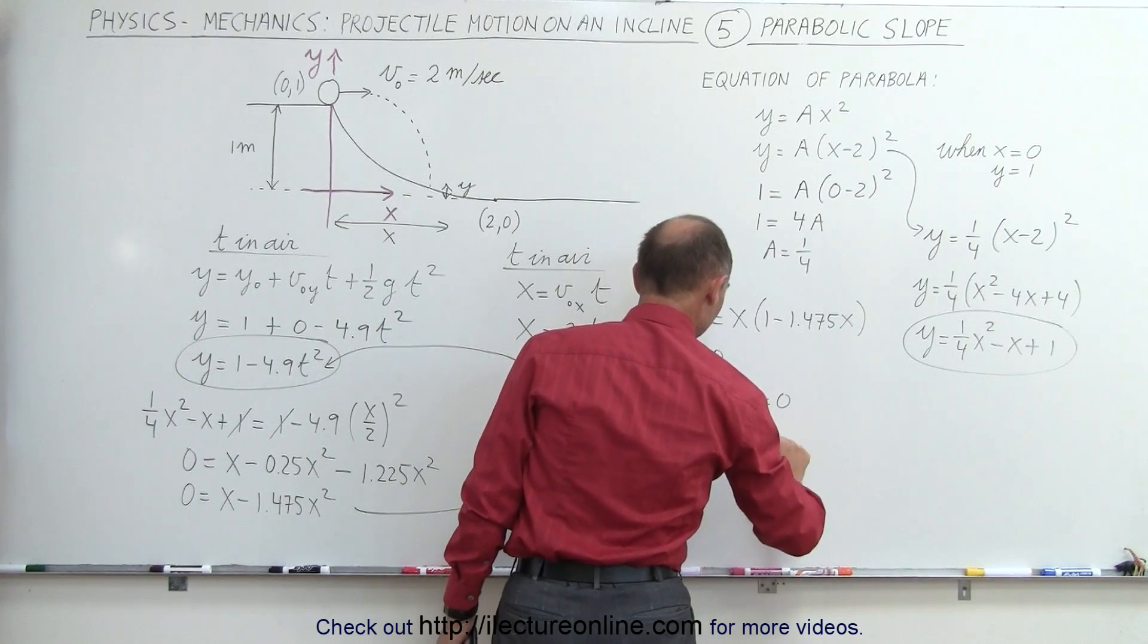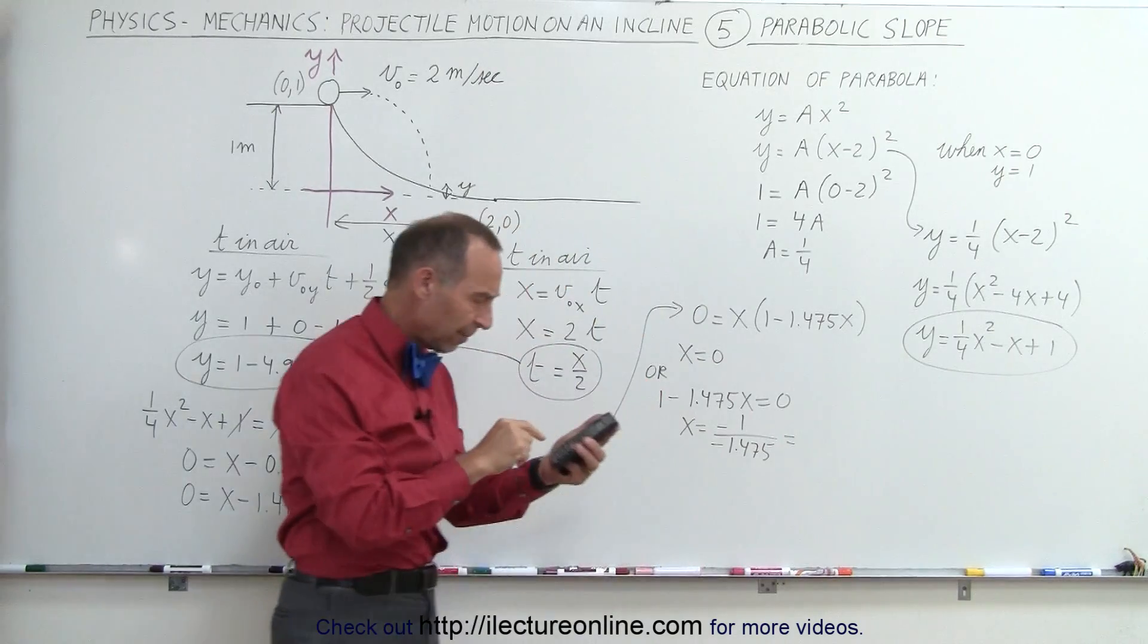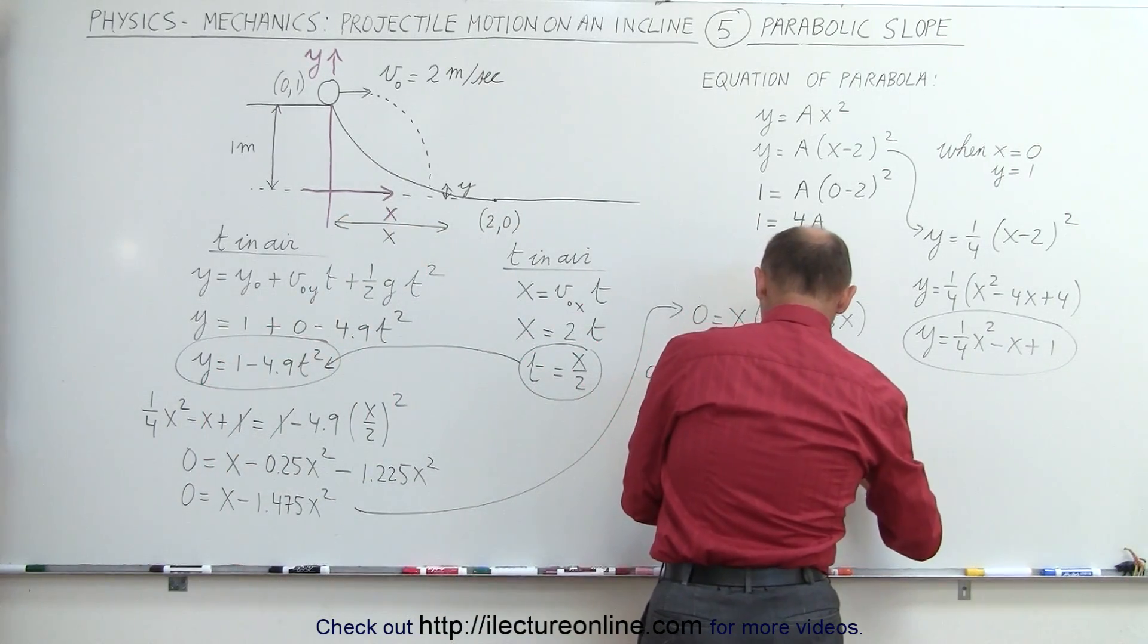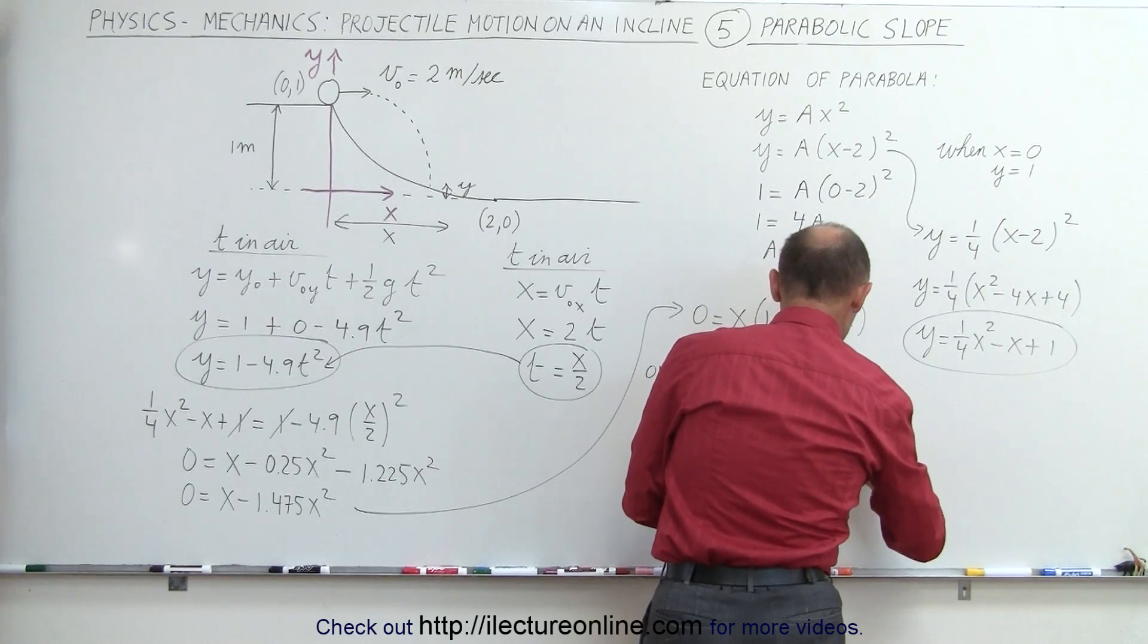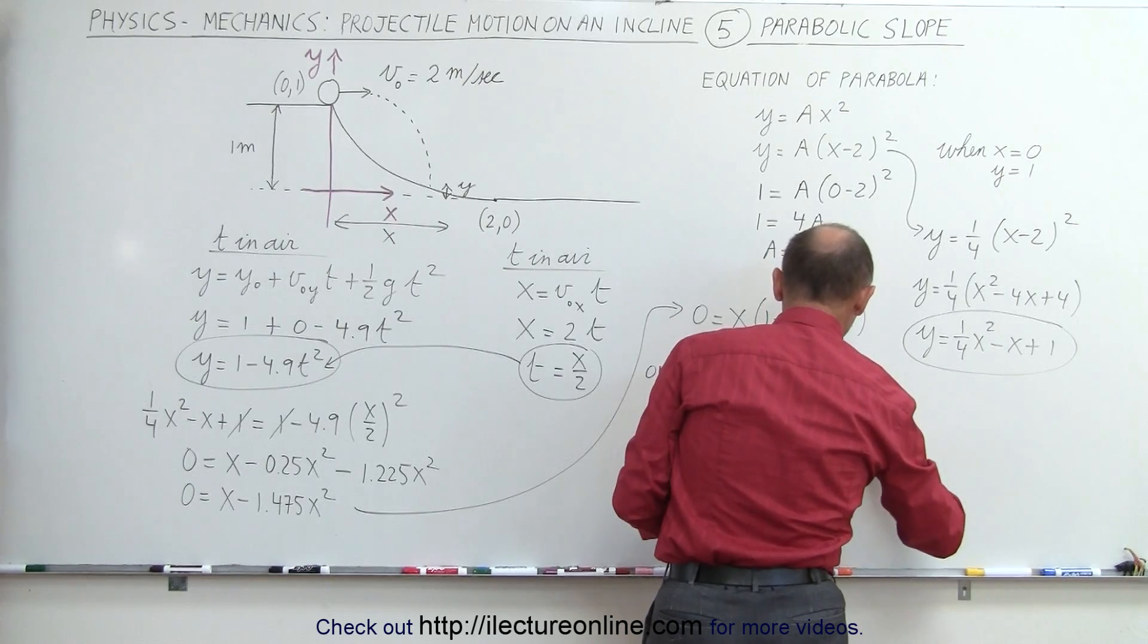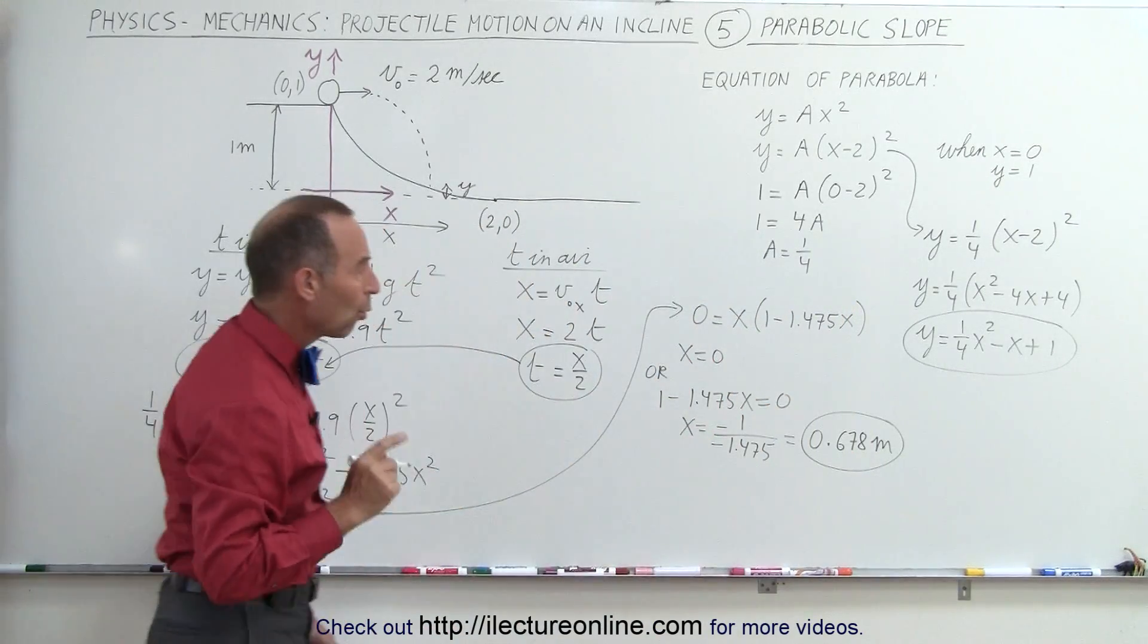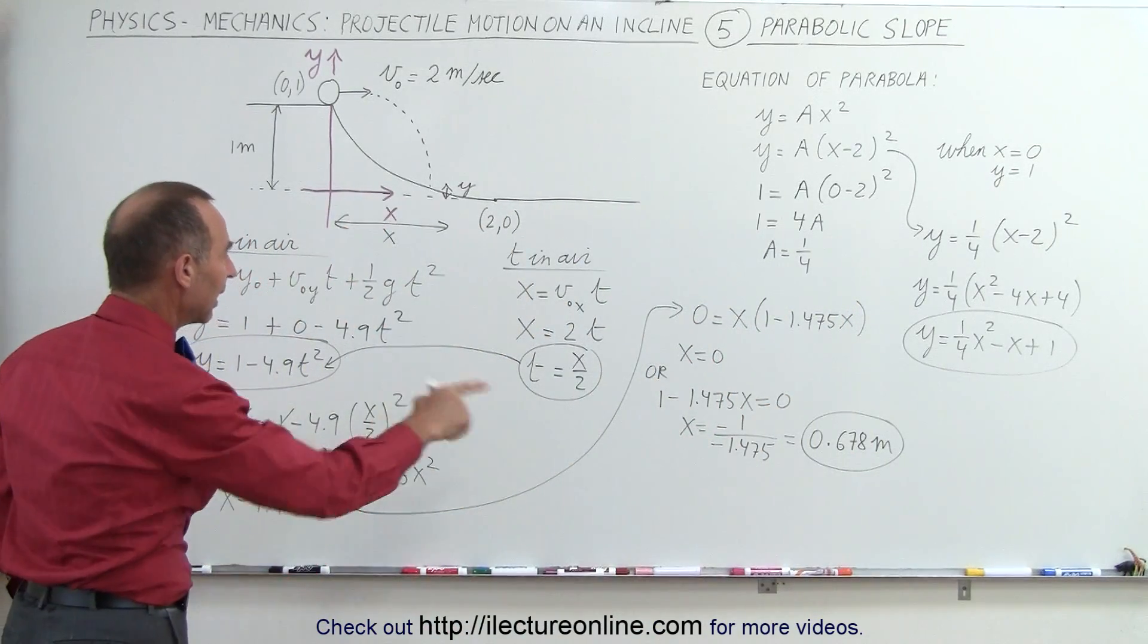Or we could say that 1 minus 1.475x equals 0, which means that x is equal to minus 1 divided by minus 1.475, which is 0.678, and of course that would be in meters. So that would be the x position where the object lands.